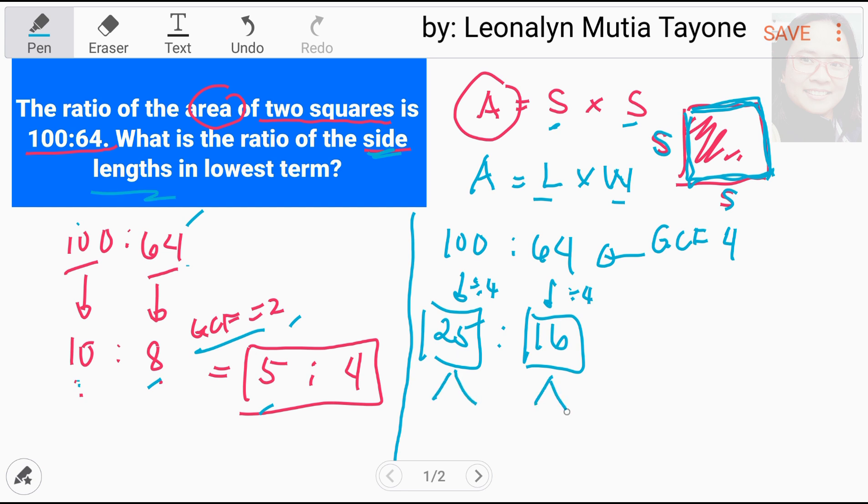Ang tanong ay yung ratio sa side length in lowest term. So, i-square root natin yan. And that is, 25, square root of 25 is 5. So, or 5 times 5. Dito ay 4 times 4 equals 16. Square root of 16 is 4. Erase na lang natin ito. Square root of 25 is 5. Square root of 16 is 4. So, ang sagot ay 5 is to 4.